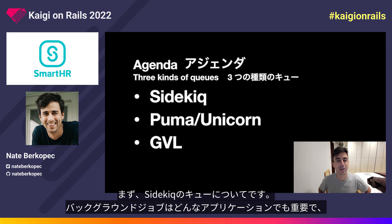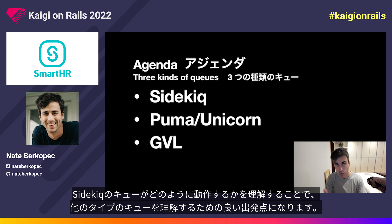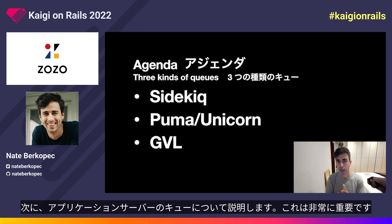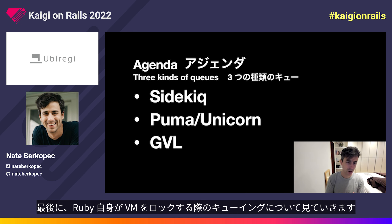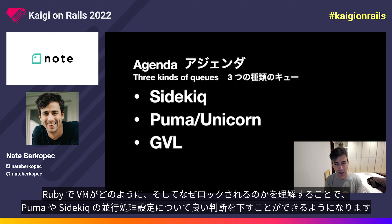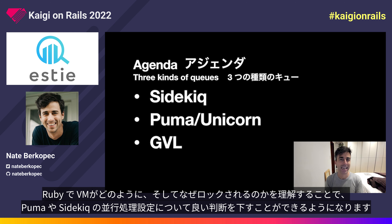First, we're going to talk about Sidekiq queues. Background jobs are an important part of any application and understanding how Sidekiq queues work will give us a good starting point for understanding other kinds of queues. Second, we're going to discuss application server queues. These queues are extremely important because they serve web requests from real human beings waiting on that response. Finally, we're going to look at queuing in VM locks in Ruby itself, which will allow us to make intelligent decisions about concurrency settings in Puma and Sidekiq.